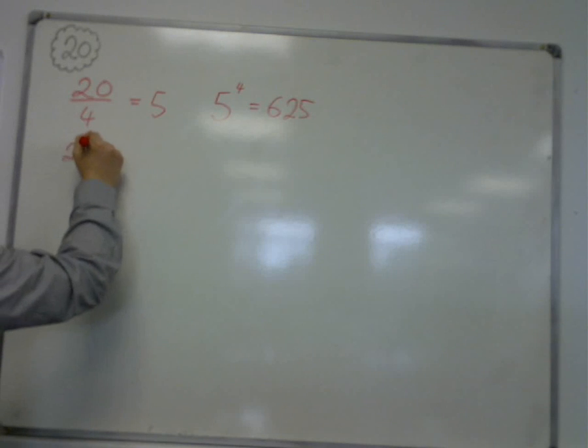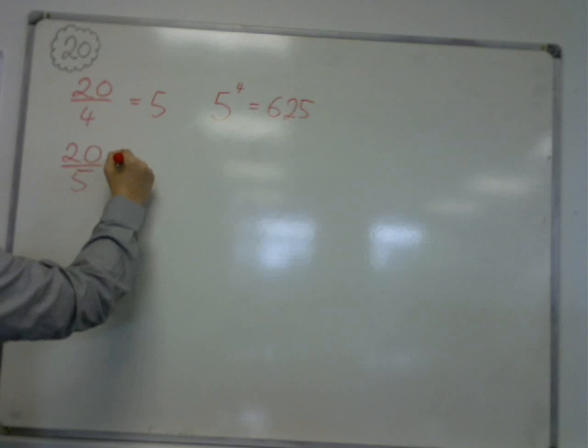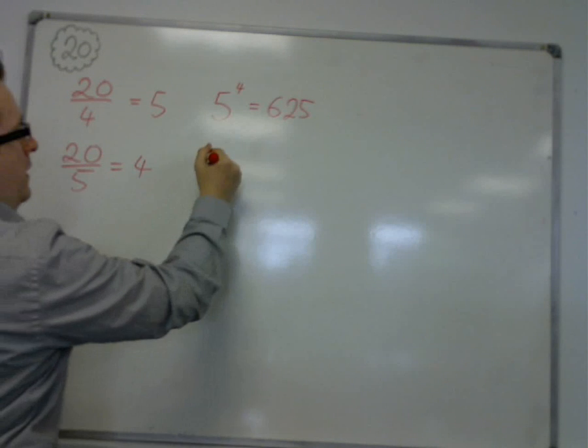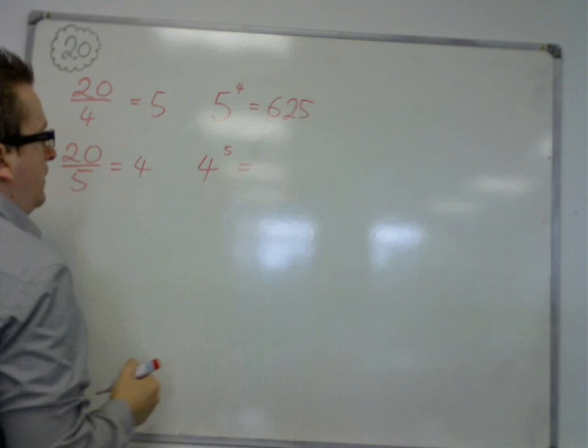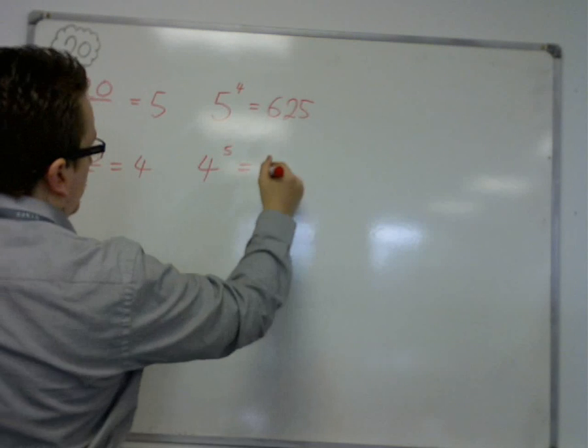If I divided by 5, then I would have 4. And I'm going to have 4 to the power of 5. 4 to the power of 5 is 1024.